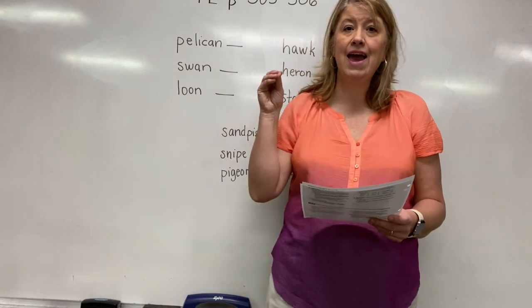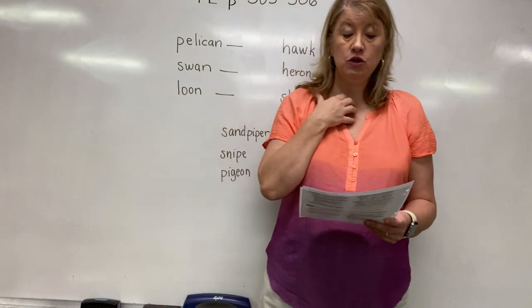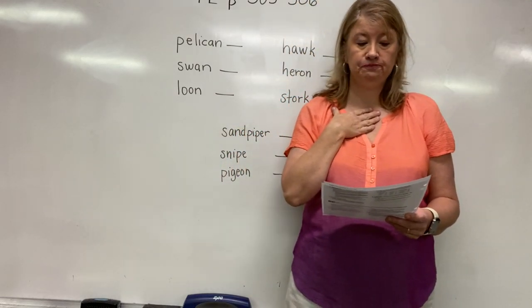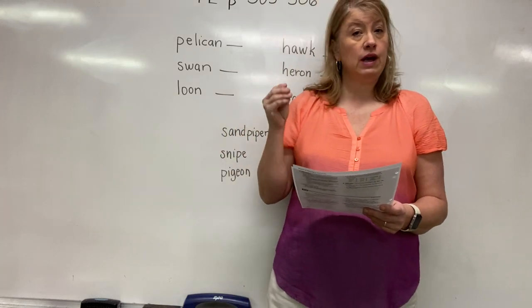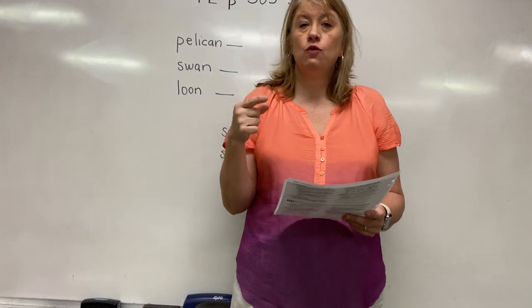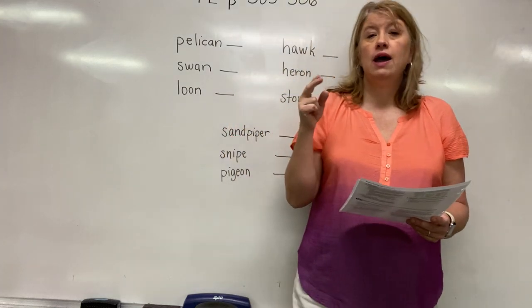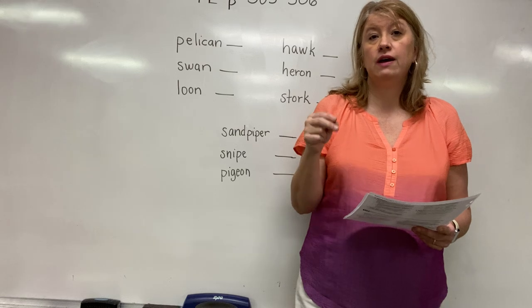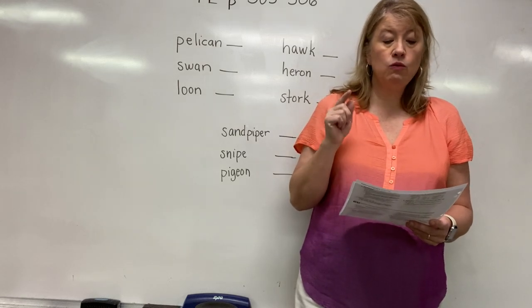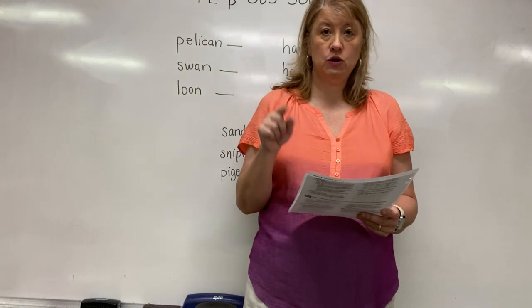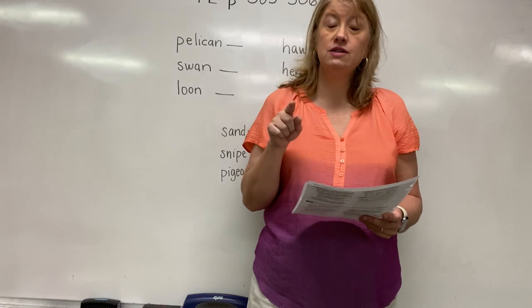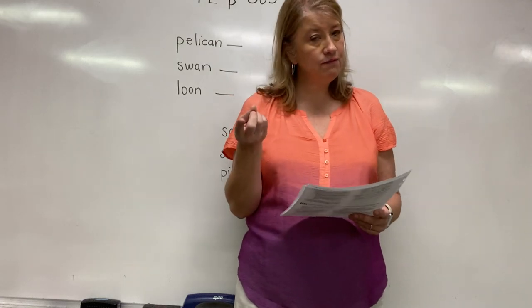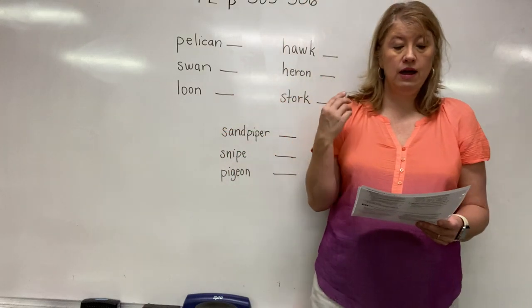Next we're going to talk about using 'a' or 'an' before a noun. 'It would be fun to take a or an helicopter ride to see the canyon.' Remember, 'a' is used before a word that starts with a consonant and 'an' is used before a word that starts with a vowel. Helicopter starts with H, and H is a consonant, so you would use 'a.' It would be fun to take a helicopter ride.